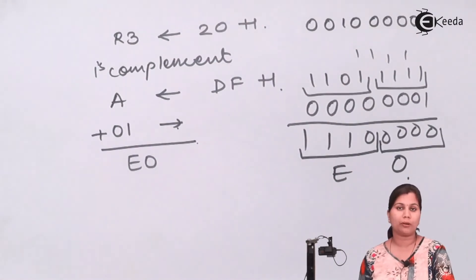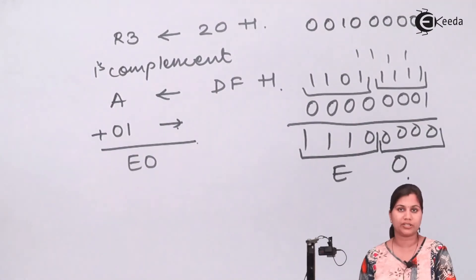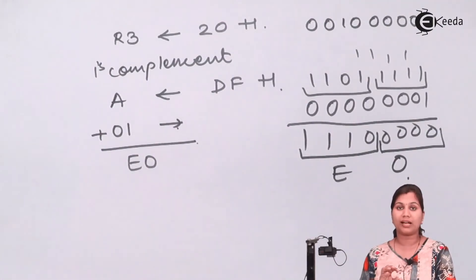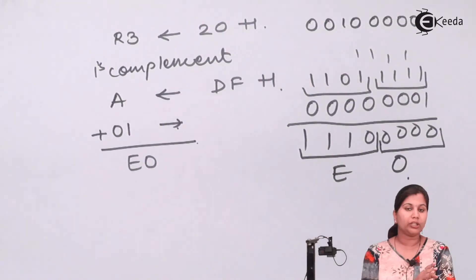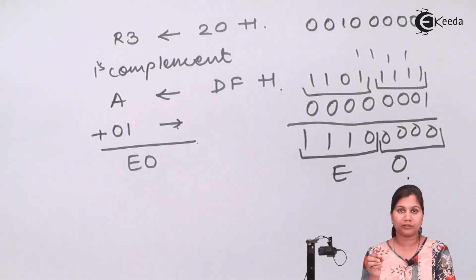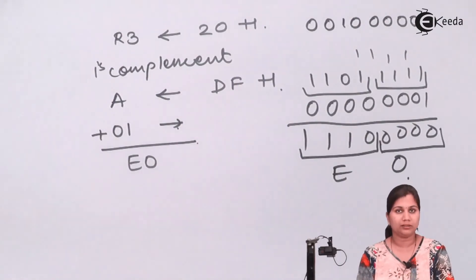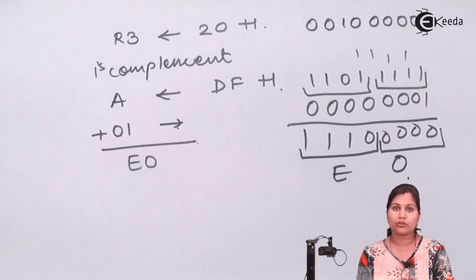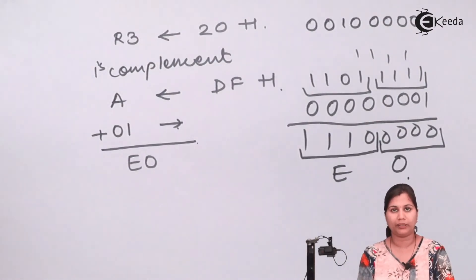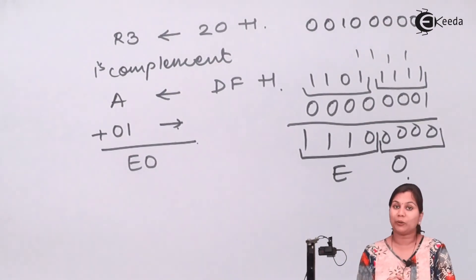If you want, the user can provide the number directly — you can write the number directly in the program, or it can be stored in a register. Either approach can be used. But to find the two's complement, you always first find the one's complement and then add 01H to it. I hope this program is now clear to you. Thank you.